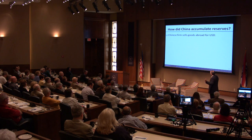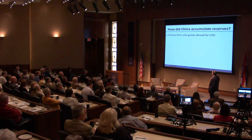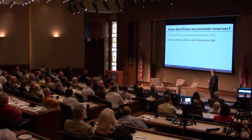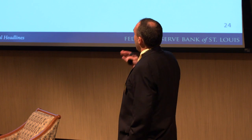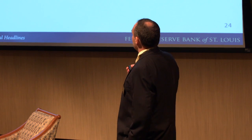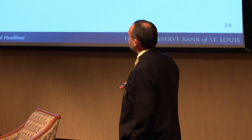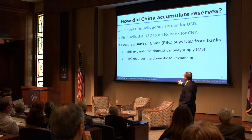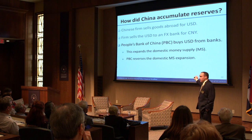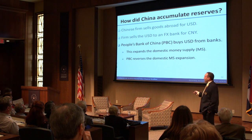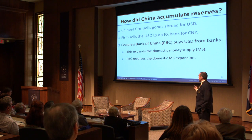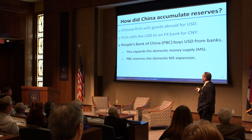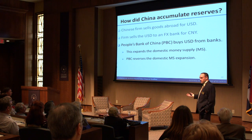How does this work mechanically? A Chinese firm might sell goods abroad for dollars. The Chinese firm would then take the dollars they just got for those goods and take them to a foreign exchange bank and exchange them for Chinese currency. The People's Bank of China would then buy those dollars from the foreign exchange bank. Ordinarily — for those of you who are boffins about monetary economics — this is going to expand the domestic money supply, but the People's Bank of China takes various steps to reverse this domestic money supply expansion.